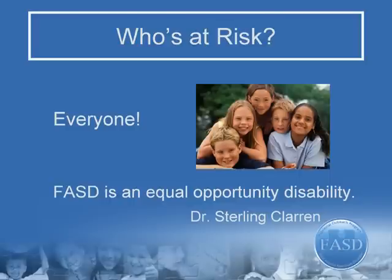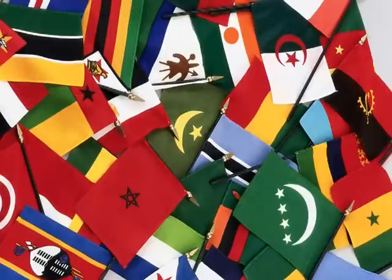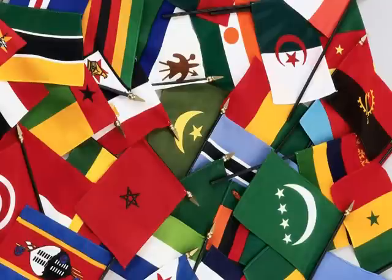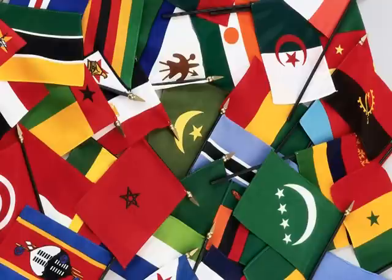Dr. Sterling Claren states: fetal alcohol spectrum disorder, or FASD, is an equal opportunity disability. FASD crosses all socioeconomic boundaries and all races. For example, Russia has a high prevalence of FASD due to the amount of vodka consumed. Some of the first medical studies of FASD occurred in the 1960s in France. In Ireland, two recent studies showed that 85% and 82% of women drank during pregnancy. Wherever there is alcohol, there is risk of FASD.